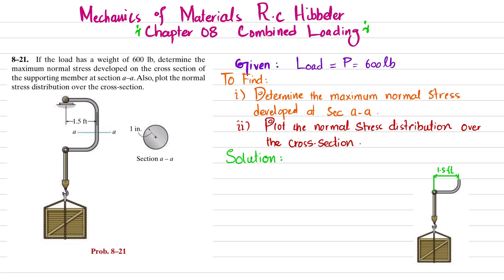Let's start with the solution. The first step is to cut this section at AA and draw the free body diagram. The weight P of 600 pounds is acting downward. When you cut it at section AA, you will have a normal force N, and you will also have a moment. Let this moment be in the clockwise direction.